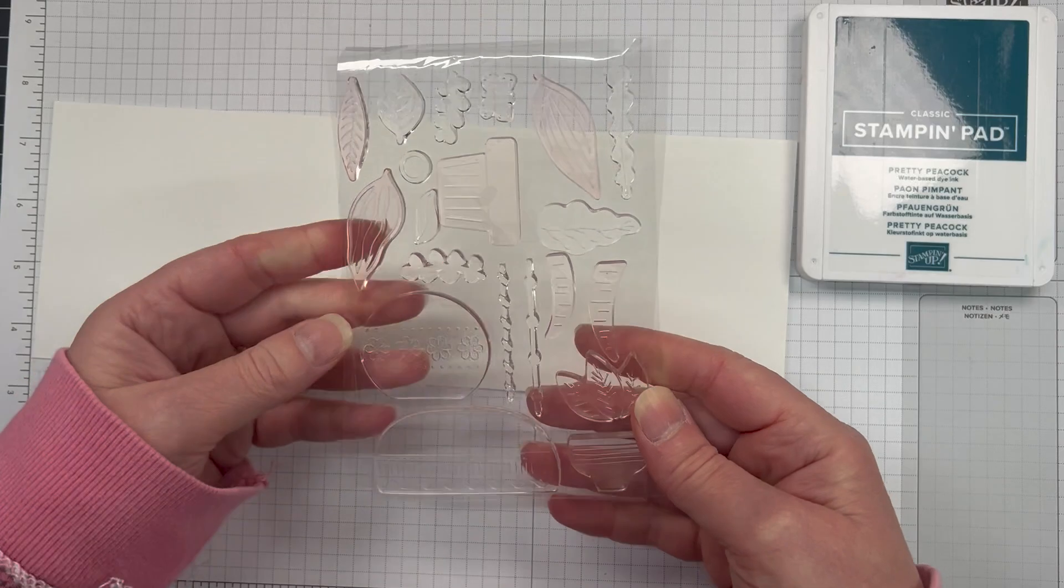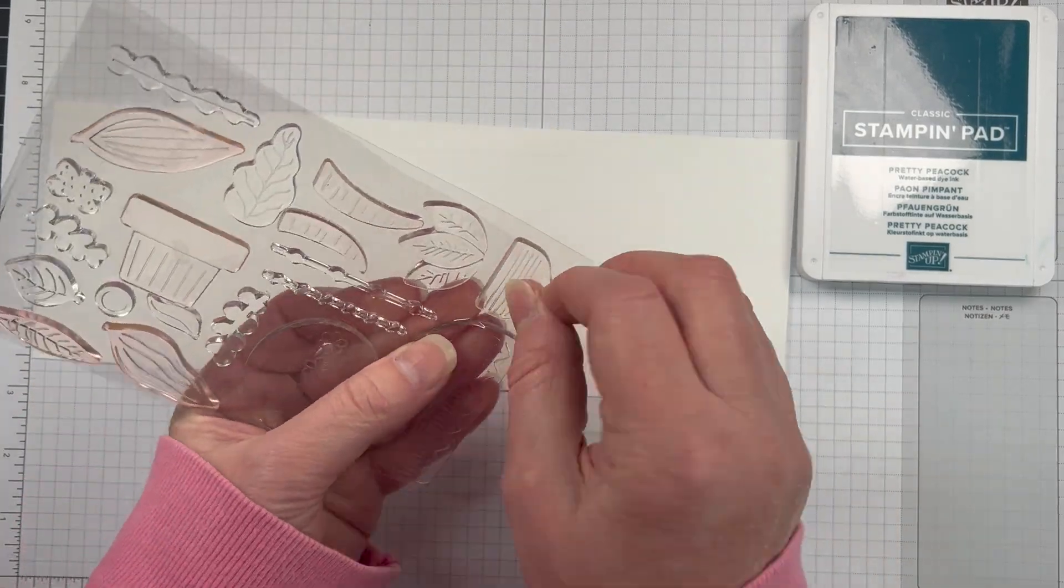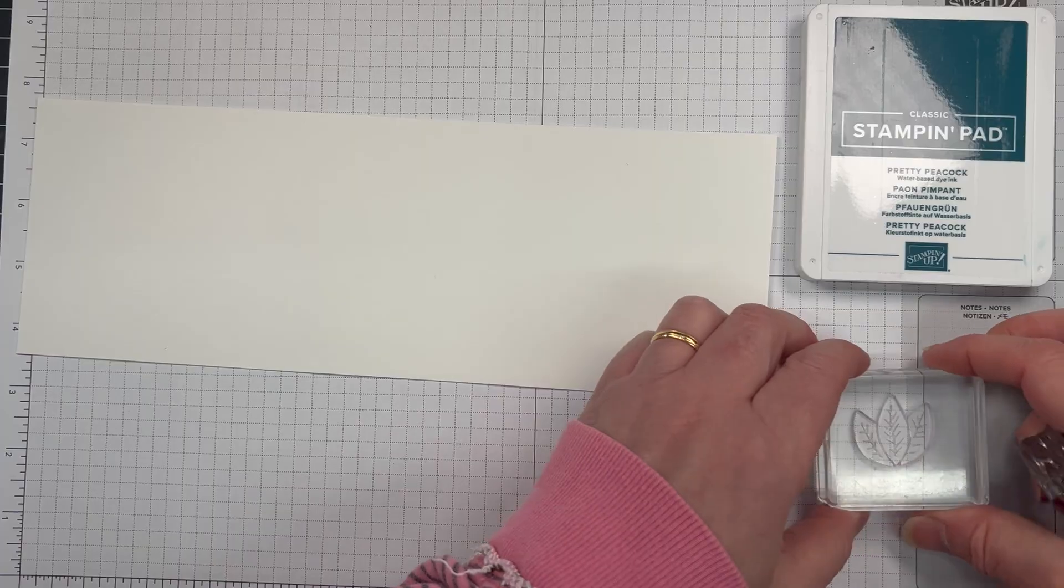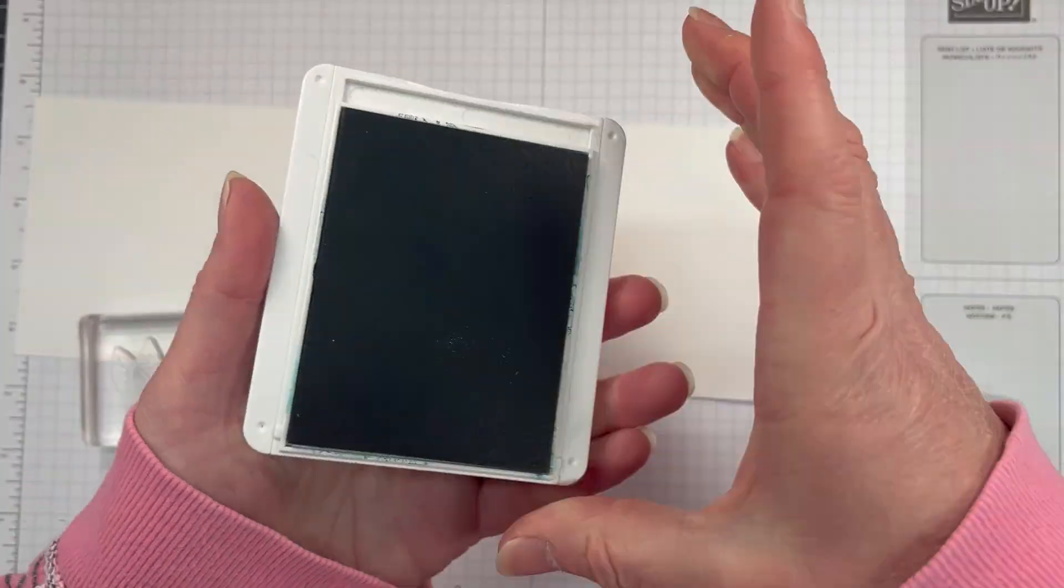I am going to use the second card base to do some stamping with that Planted Paradise stamp set. This is actually a really simple card, which I really love.